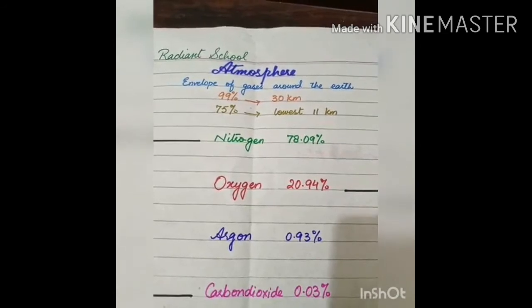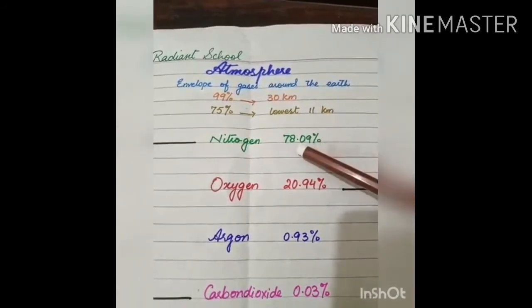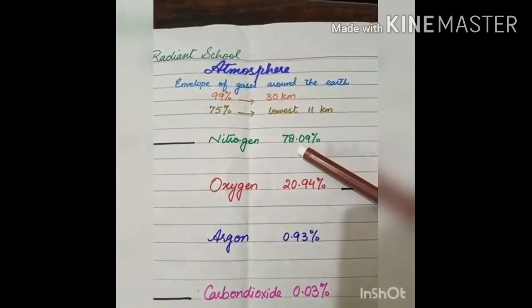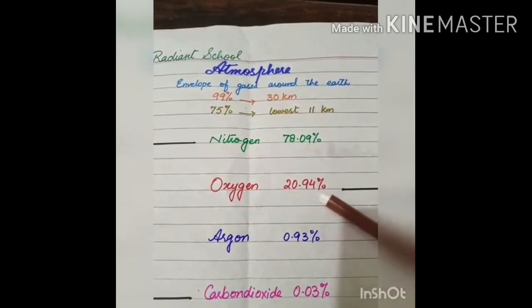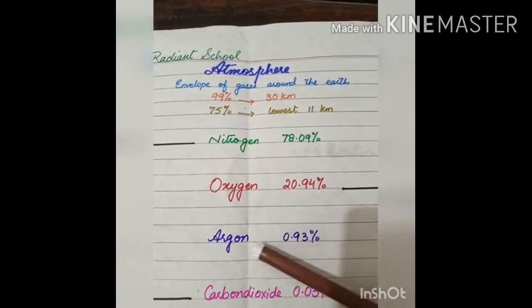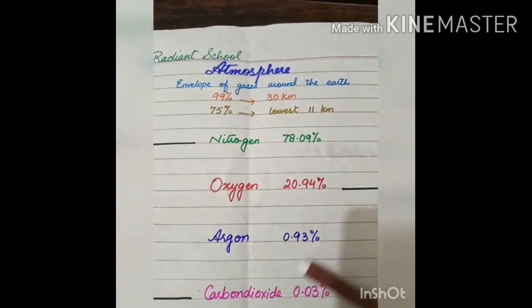The normal composition of dry air is nitrogen 78.09%, oxygen 20.94%, argon 0.93% and carbon dioxide is 0.03%.